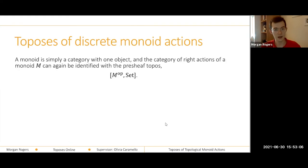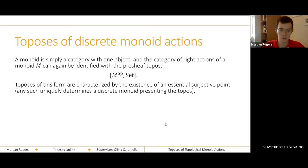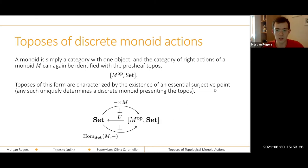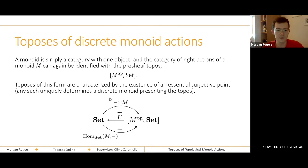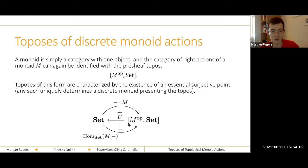When we get around to monoids, this will be important. If I take a monoid M, I can consider it as a category with a single object, and its right actions form a presheaf topos, just as before. These toposes are characterized by the existence of an essential point which is also surjective, because the inverse image functor is faithful. If I have an essential surjective point of a topos, I can recover a monoid which represents it — either by looking at what happens to the terminal object of sets under this monad, or by looking at the endomorphisms of this point. That second way of constructing a monoid will be important later.